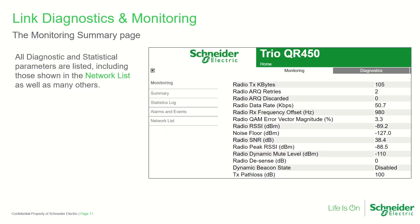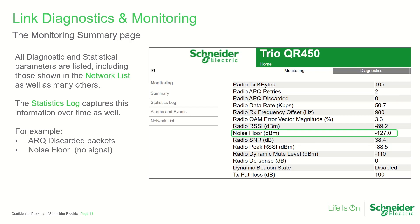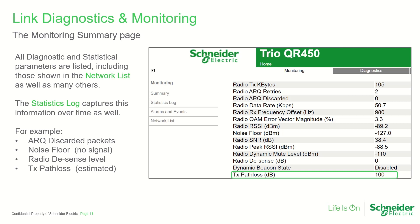The monitoring summary page in a radio's user interface lists all available diagnostic and statistical parameters, including those shown in the network list. The statistics log page also captures this information displayed over a selectable period of time. The ARQ discarded packets parameter tracks how many messages have been lost due to the ARQ limit being exceeded. The noise floor parameter gives an average indication of the RF environment near the receiver. The radio desensitization level indicates any desensitization of the receiver due to noise, and the transmission path loss value gives an indication of path loss caused by all factors.